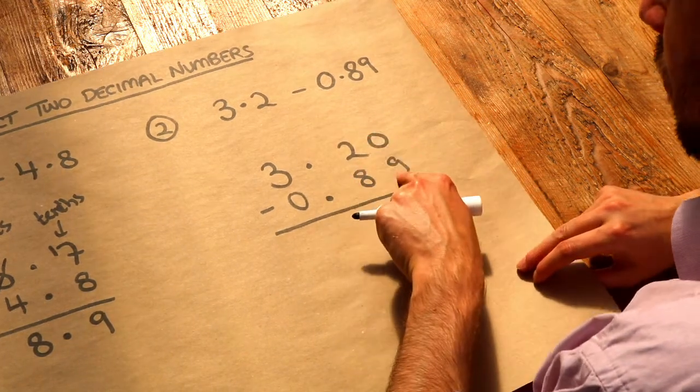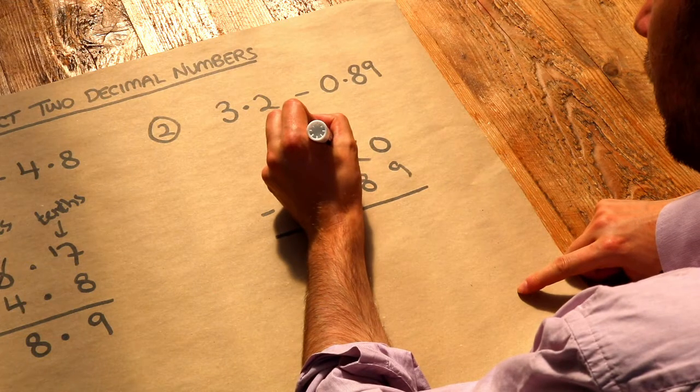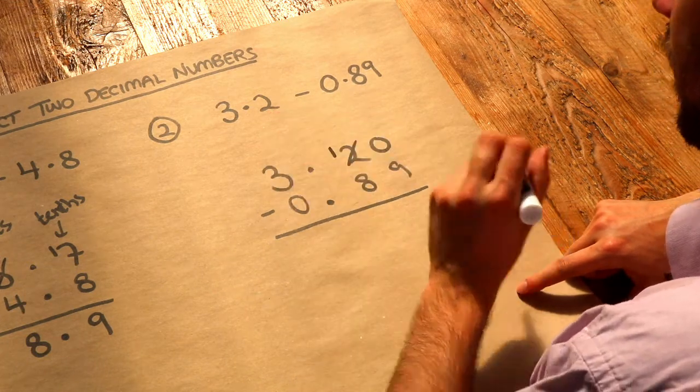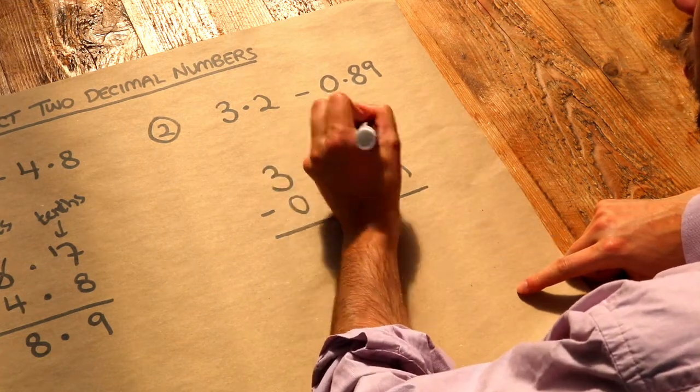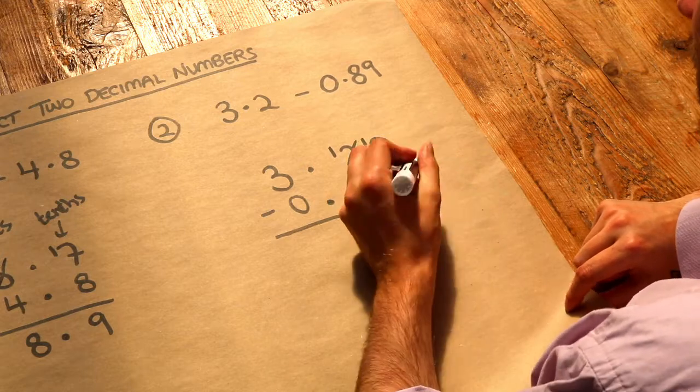We can do 0 minus 9. We can't do that, so we borrow a 1. The 2 becomes 1, and then we can put that borrowed 1 here. 10 minus 9 is now 1.